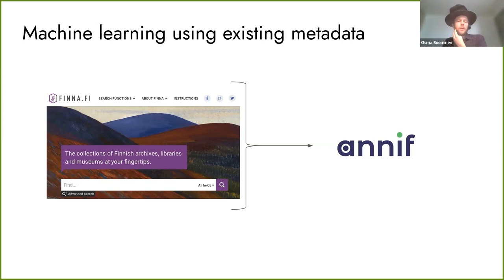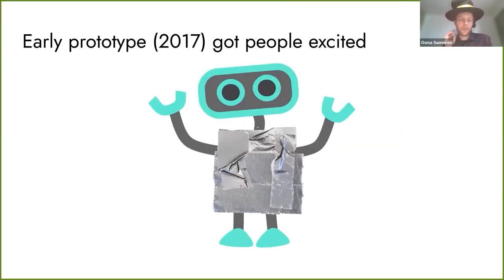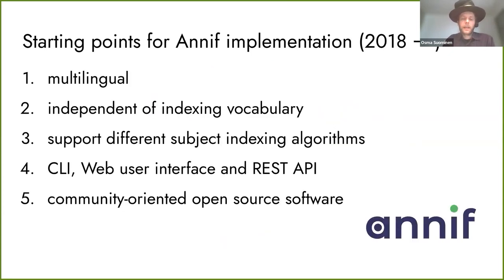Our starting point was Finna, our main discovery system — a search engine for the cultural heritage collections of Finnish libraries, archives and museums. We decided to use the millions of metadata records in Finna to train machine learning models for automated subject indexing. The first prototype of ANIF was created in 2017. The technical implementation was very crude but it got people excited. So in 2018, we started development on a new version built on a more solid foundation with clear goals and principles.